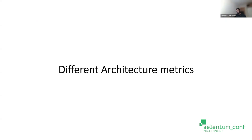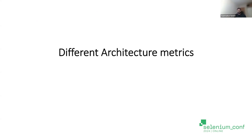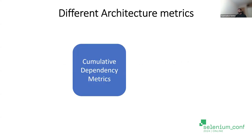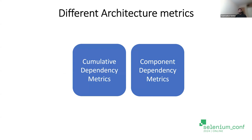Let's go into architecture metrics — that's the whole title: demystifying architecture metrics. There are three different metrics, but the two most commonly used are cumulative dependency metrics and component dependency metrics. There's also a visibility metrics by Herbert. Software architecture metrics try to measure the structure and design of the software — similar to code quality metrics like cyclomatic complexity or code coverage. ArchUnit can capture these metrics.